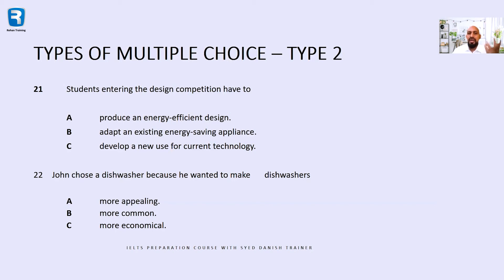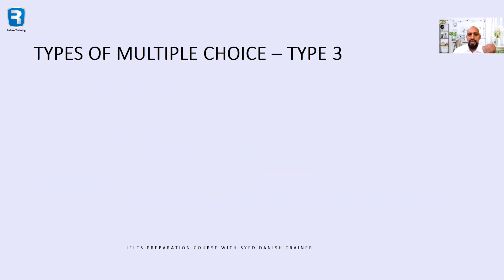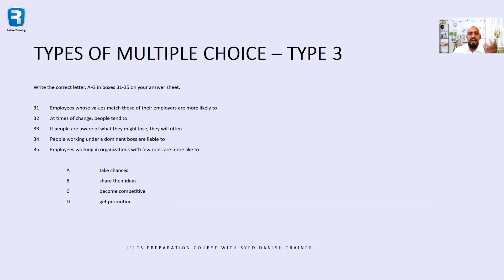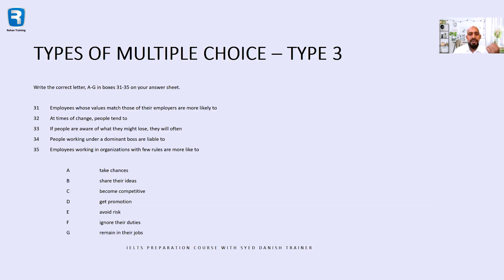You have to choose one answer, and in some cases you have to choose two answers. This is type number 3. In type number 3, you have to do cross-matching — matching which line is the answer to which other line. For example: employees whose values match those of their employer are more likely to... you have to choose one matching answer.